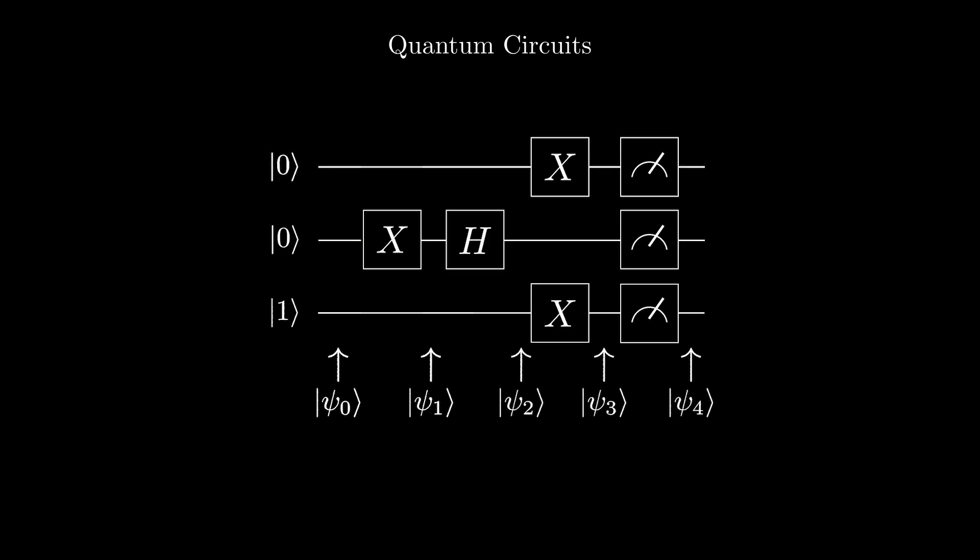For example, this is an x-gate. These boxes are measurements, and represent us measuring the qubit. The horizontal is the order in which we apply the gates. We start from the left and go to the right.